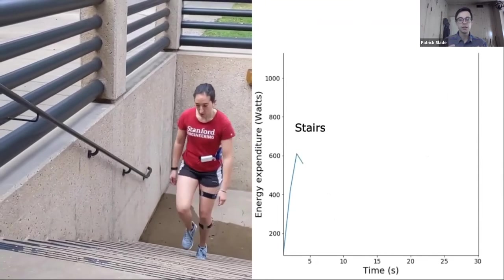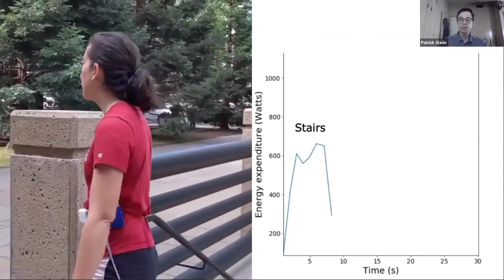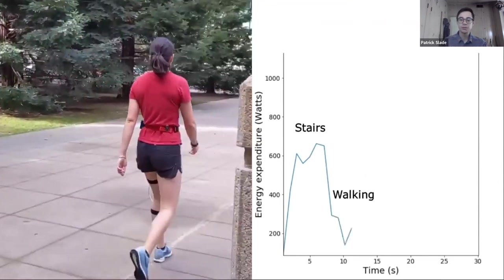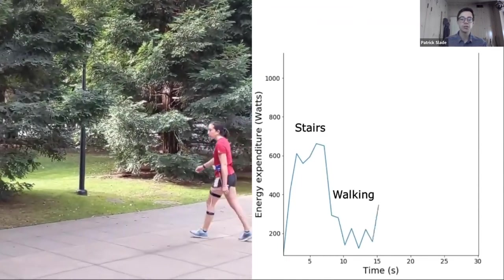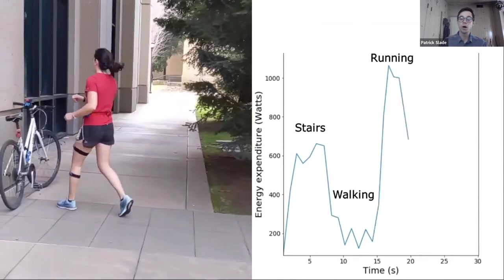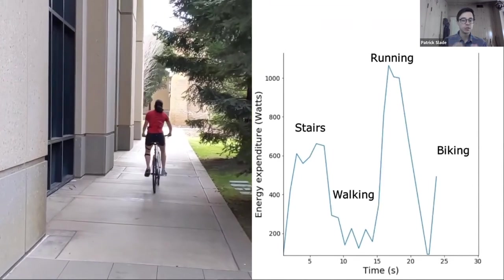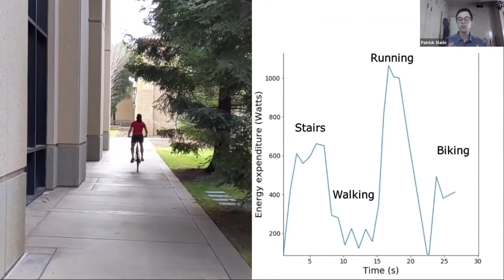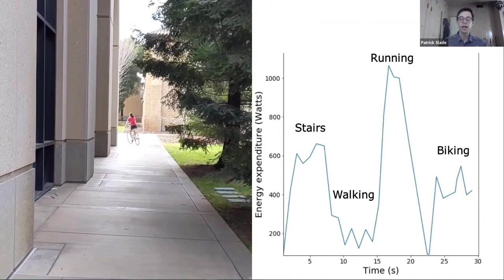Here you can see the system in action. Every time the participant takes a new step, an energy estimate appears. As the person transitions between activities, you can see the measured energy changes immediately — for example, transitioning from walking to running. This is a really important point: because we're mapping motion to energy expenditure, as soon as a person starts running, we're able to capture the energy they're expending by looking at that motion, giving us this instantaneous change in energy expenditure.